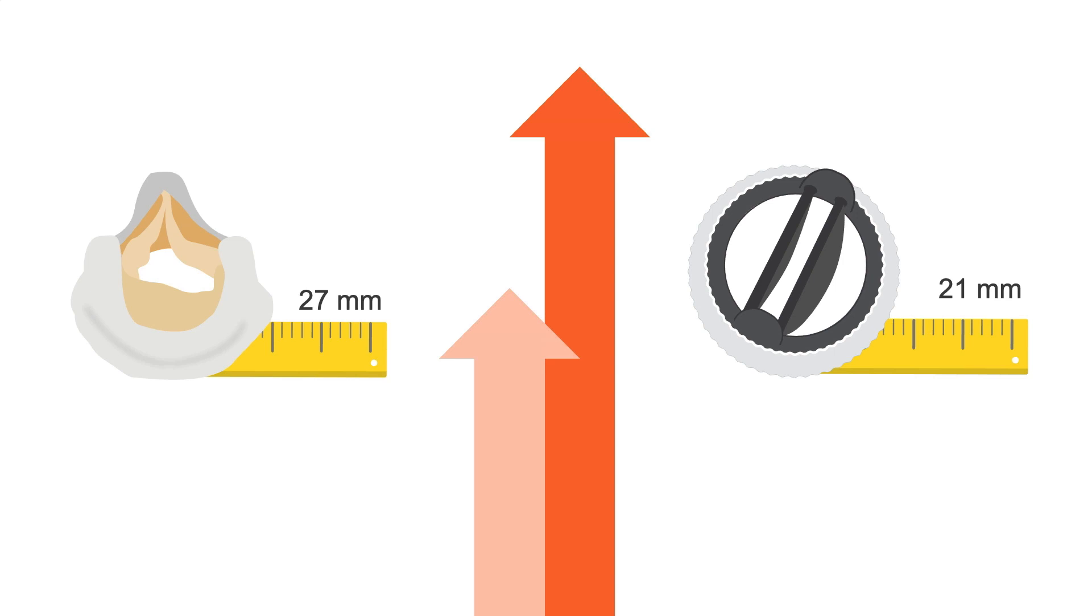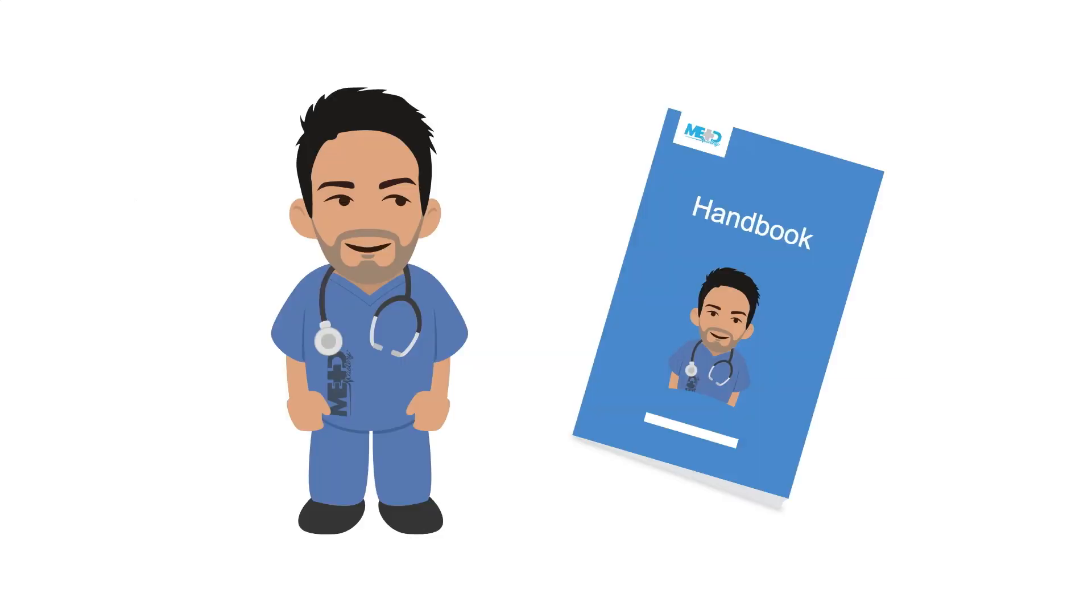It is very important to have all the information related to the model, size, and type of valve before performing the echocardiogram. The hemodynamic profiles and reference values for the different prosthetic valves can be found in the handbook.